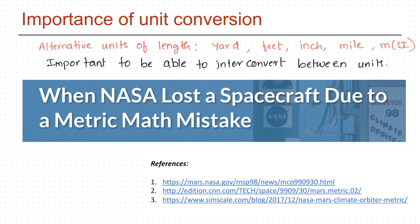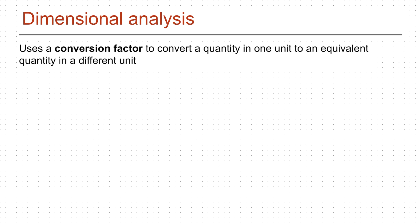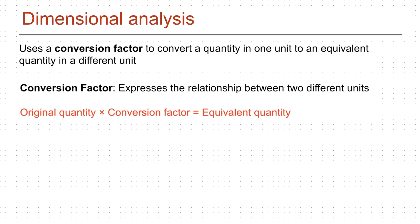Please click on the links below to read more about this disaster. Now that we know how important unit conversion is, let us learn the method we use — called dimensional analysis. Dimensional analysis uses a conversion factor to convert a quantity expressed in one unit to an equivalent quantity in a different unit. A conversion factor expresses the relationship between two different units.